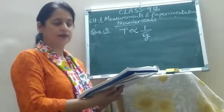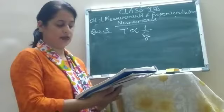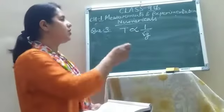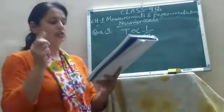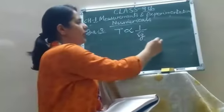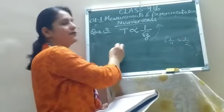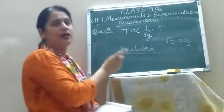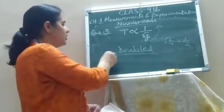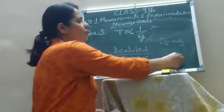Question 3: A seconds pendulum is taken to a place where acceleration due to gravity falls to 1/4. How is the time period affected? The time period will be affected because it is inversely proportional to the square root of G. When G falls to 1/4, the square root of 1/4 is 1/2, and it goes in the denominator, so the time period doubles. Earlier the time period of the seconds pendulum was 2 seconds, so the new time period will be 4 seconds.